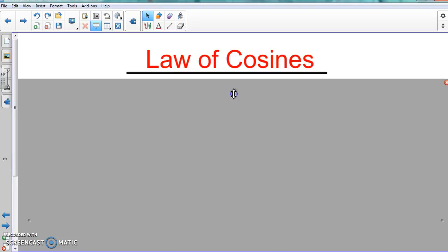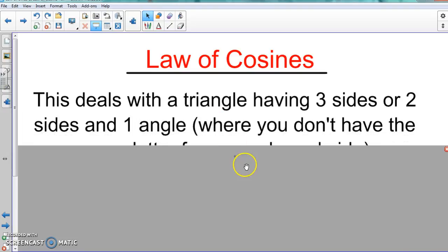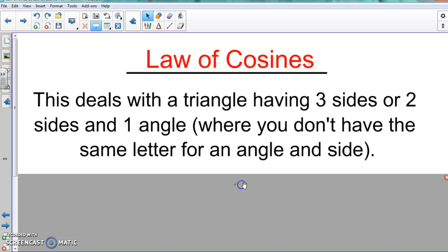And with the Law of Cosines, these are the two times you're going to see it. They either give you all three sides of the triangle—again, not a right triangle, but just a regular triangle—or they'll give you two sides and an angle, and none of the letters match up.